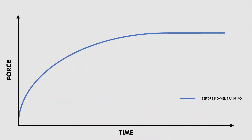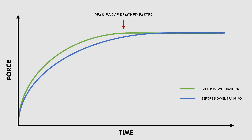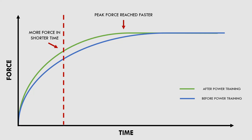As we can see here, an athlete who has used fast velocity power training can produce the same amount of force, but it reaches maximal levels faster than previously. So during athletic movements, more force can be produced in shorter time frames.